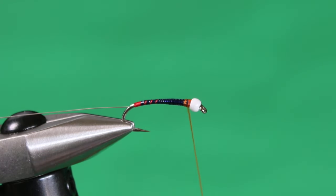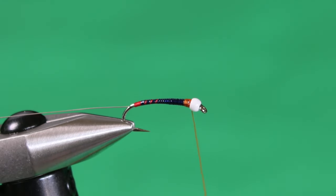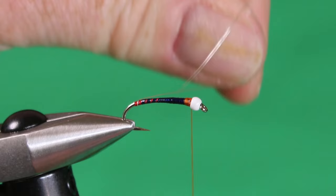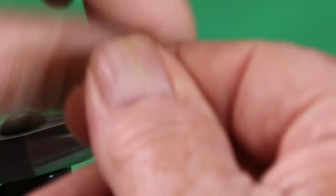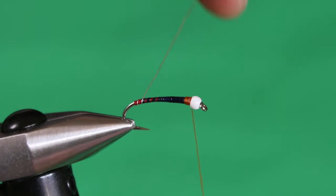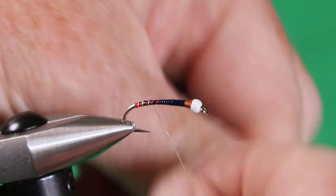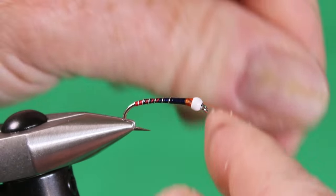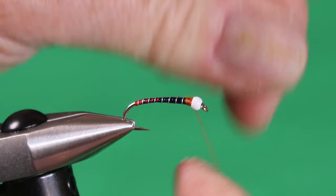We're just going to trim this off, a few extra wraps for added security, and then we're just going to come through with our silver ribbing. One turn right through the middle of that butt, one turn right on the first part of the blue. We're trying for seven segments. So there's two, three, four, five, six, seven, and up.